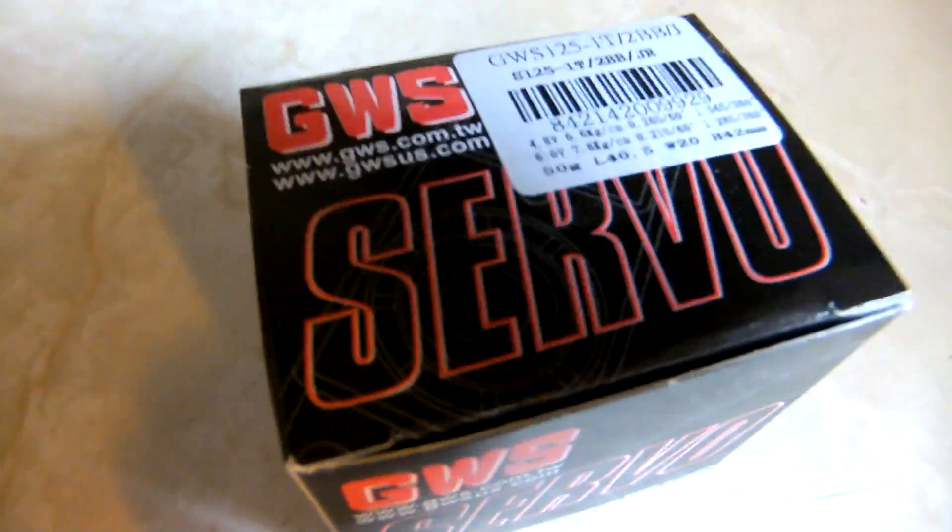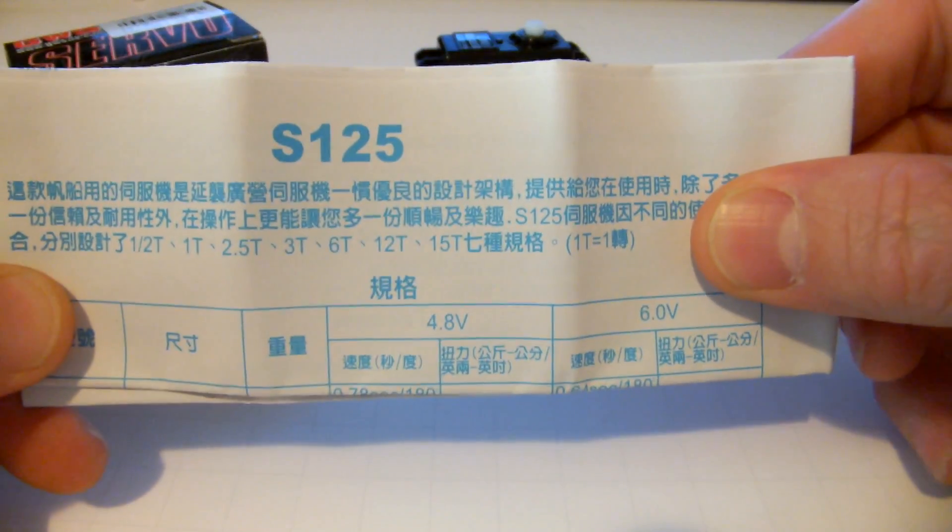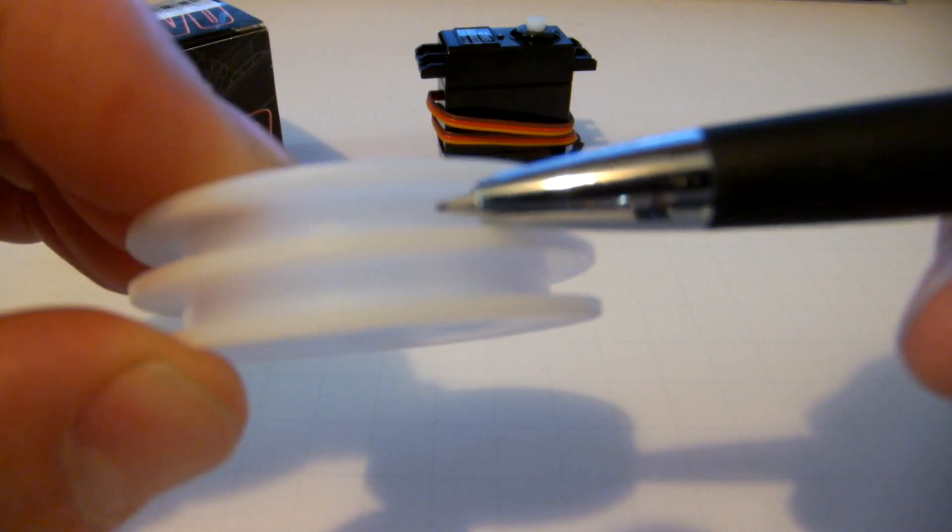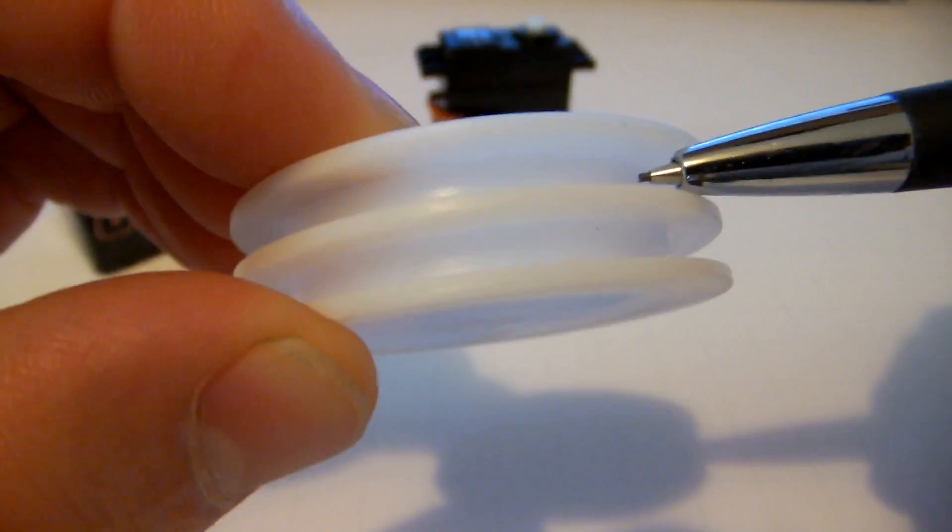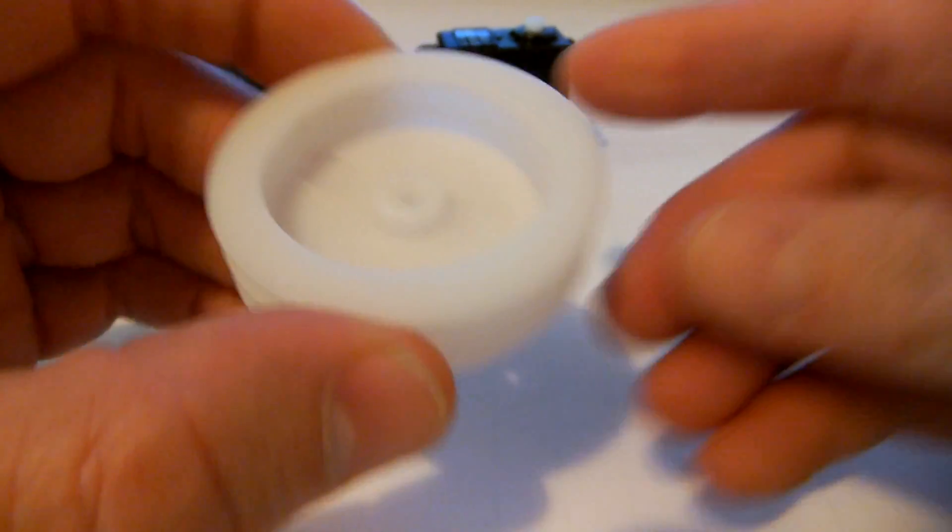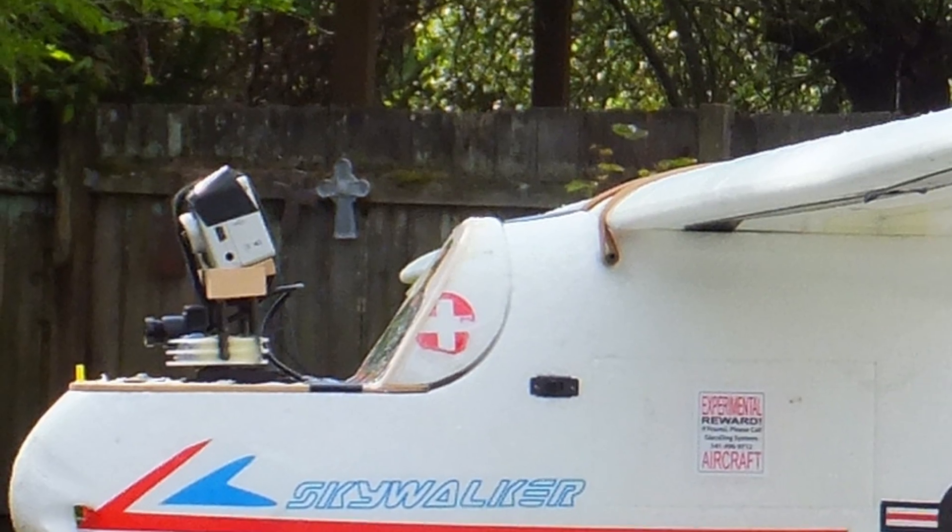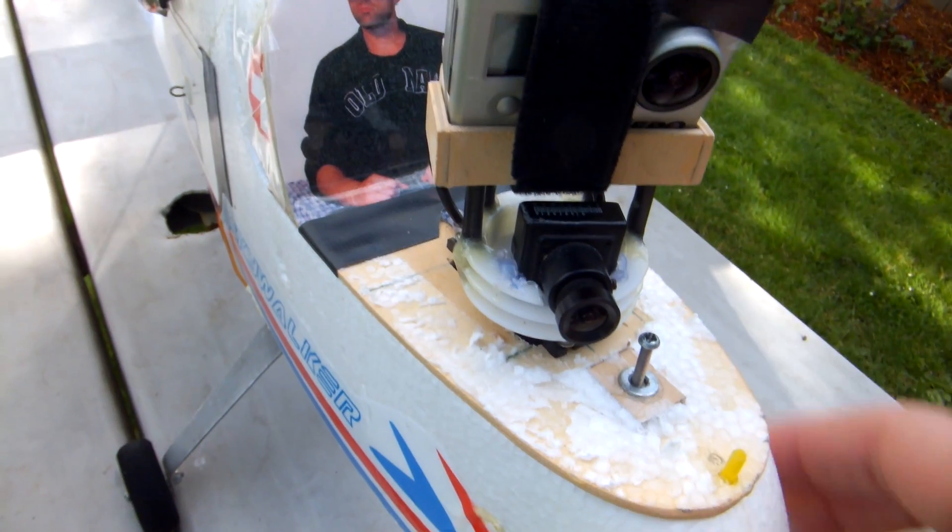That's what I love about this servo. It comes packaged with an instruction sheet, typical servo mounting hardware, and a two grooved wheel which is normally used to spool up nylon cord on RC sailboats. This wheel is perfect as a platform for mounting FPV cameras.